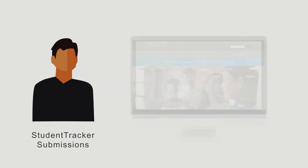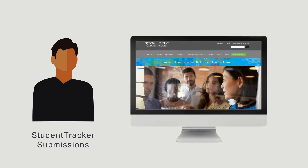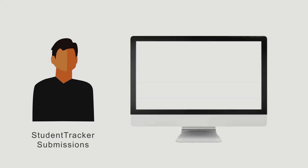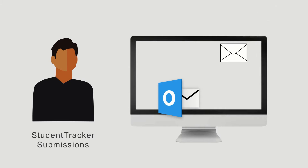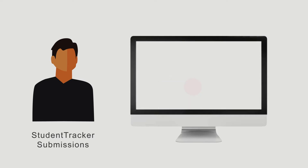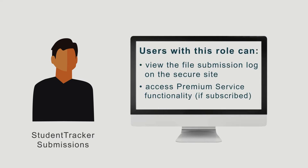The Student Tracker Submissions role allows a user to upload their Student Tracker request file via secure FTP. This user role also receives email notifications related to the validation status of those files. Users can view the file submission log on the Secure Site and, if applicable, access premium service functionality.